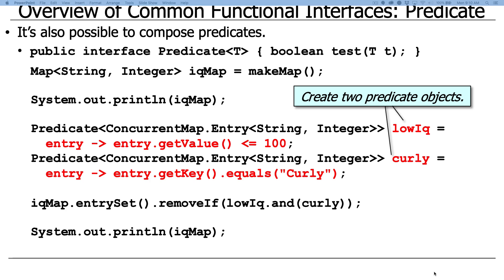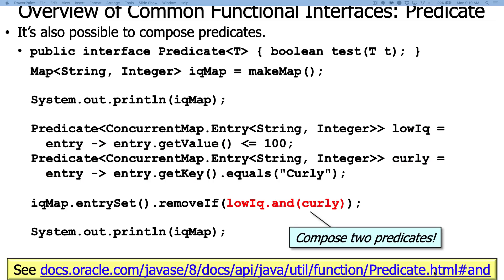And then we can do this. We can say IQ map dot entry set removeIf low IQ dot and curly. So what that's saying is remove an item from the map if it's the low IQ entry and, which is looking at the value in this case, and it matches the curly key. So that's an example of composing things together using the AND operation.